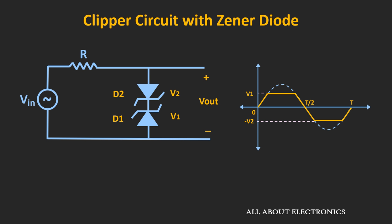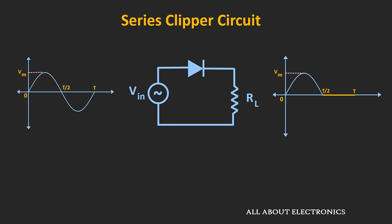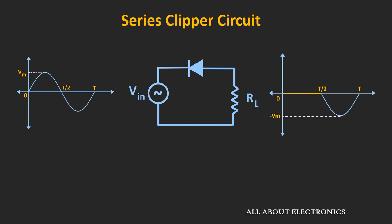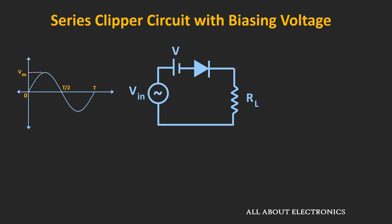Now let us see the series clipper circuit. As mentioned earlier, the half-wave rectifier is the simplest form of series clipper circuit. Considering an ideal diode, the circuit passes only the positive half-cycle and rejects the negative half-cycle. If we consider the actual diode, it will conduct whenever the input voltage Vin is greater than 0.7V, and in that case the peak amplitude of the output waveform will be equal to Vm minus 0.7V. By reversing the direction of the diode, it is possible to eliminate the positive half-cycle and pass the negative half-cycle. Similar to the parallel clipper circuit, it is possible to add a biasing voltage in series with this clipper circuit.